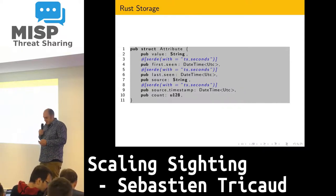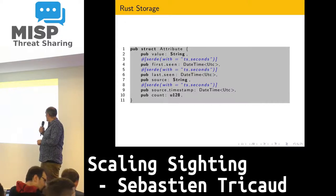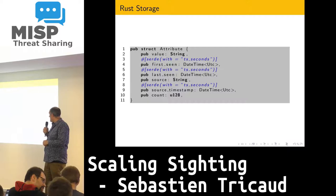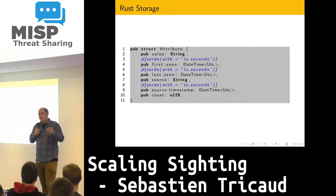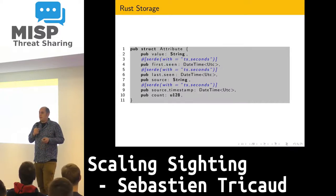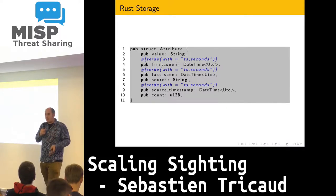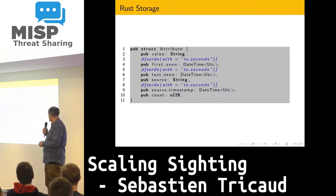This is the Rust structure of the sighting. I tried to be as minimalistic as I could be, where I only store the value (which is a string), the first time we've seen it, the last time we've seen it, the source that we can define, and the source timestamp. For example, at first I don't know what type of sighting this is, but later I learn it's from a honeypot — and I want to know when I learned about the source because it may not be from the beginning. And of course, how many times I've seen it.